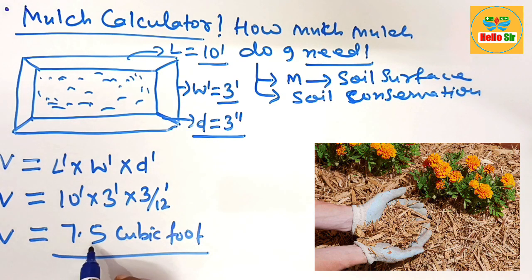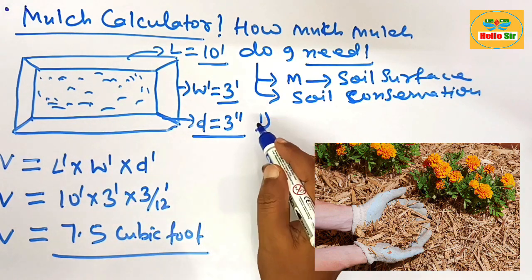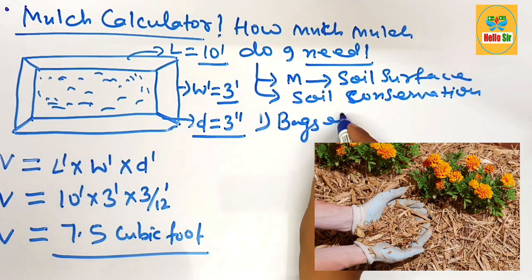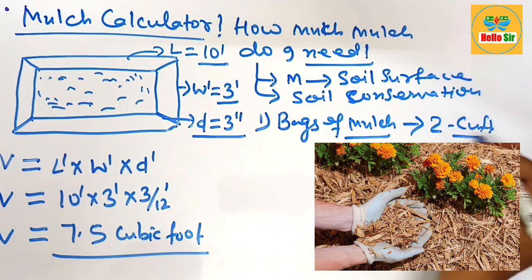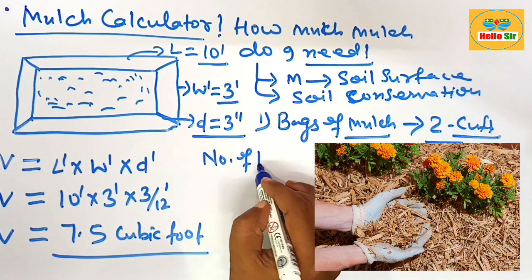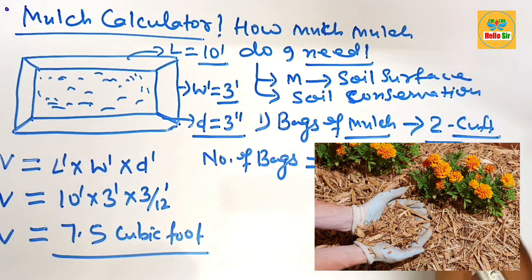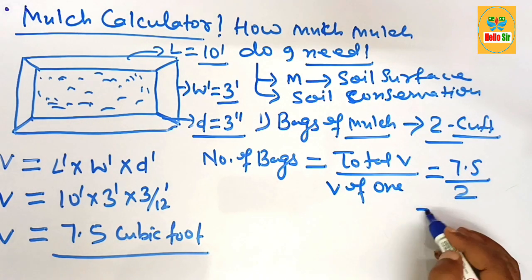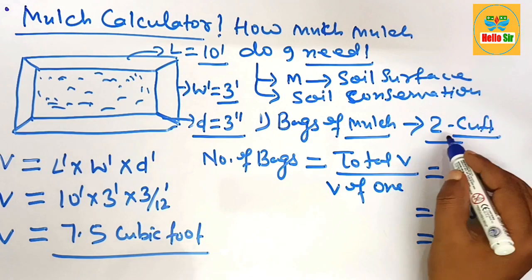It means you need about 7.5 cubic feet of mulch for this flower bed. If you want to figure out the number of bags, most bags of mulch hold about 2 cubic feet. To find the number of bags, divide the total volume by the volume of one bag: 7.5 ÷ 2 = approximately 3.75 bags, so you need to buy 4 bags.